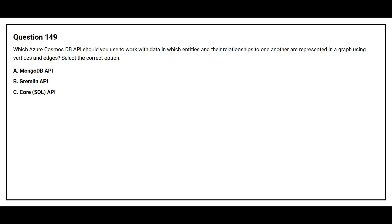Question number 149. Which Azure Cosmos DB API should you use to work with data in which entities and their relationships to one another are represented in a graph using vertices and edges? Option A: MongoDB API. Option B: Gremlin API. Option C: Core SQL API. The correct answer is Option B: Gremlin API.